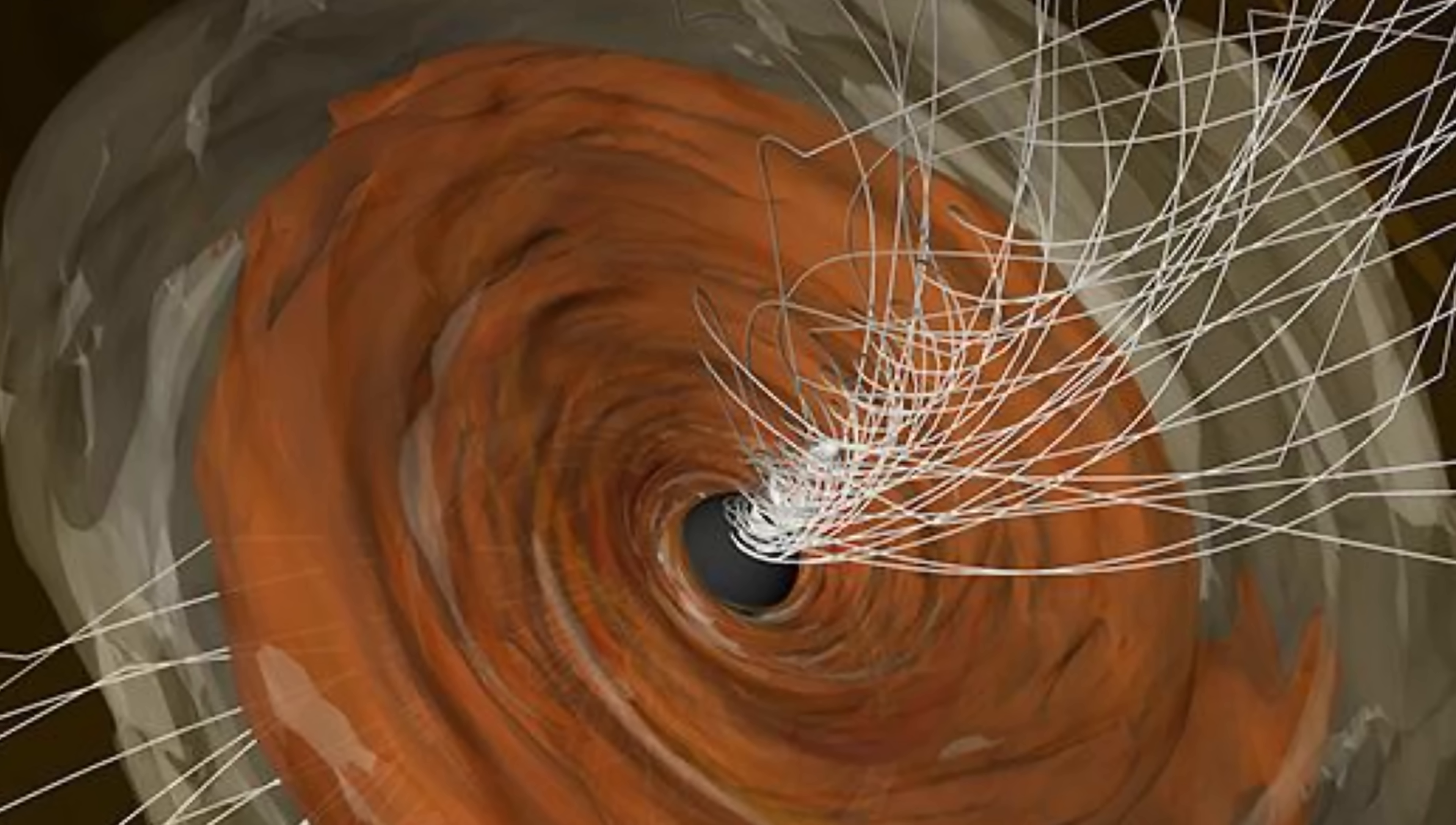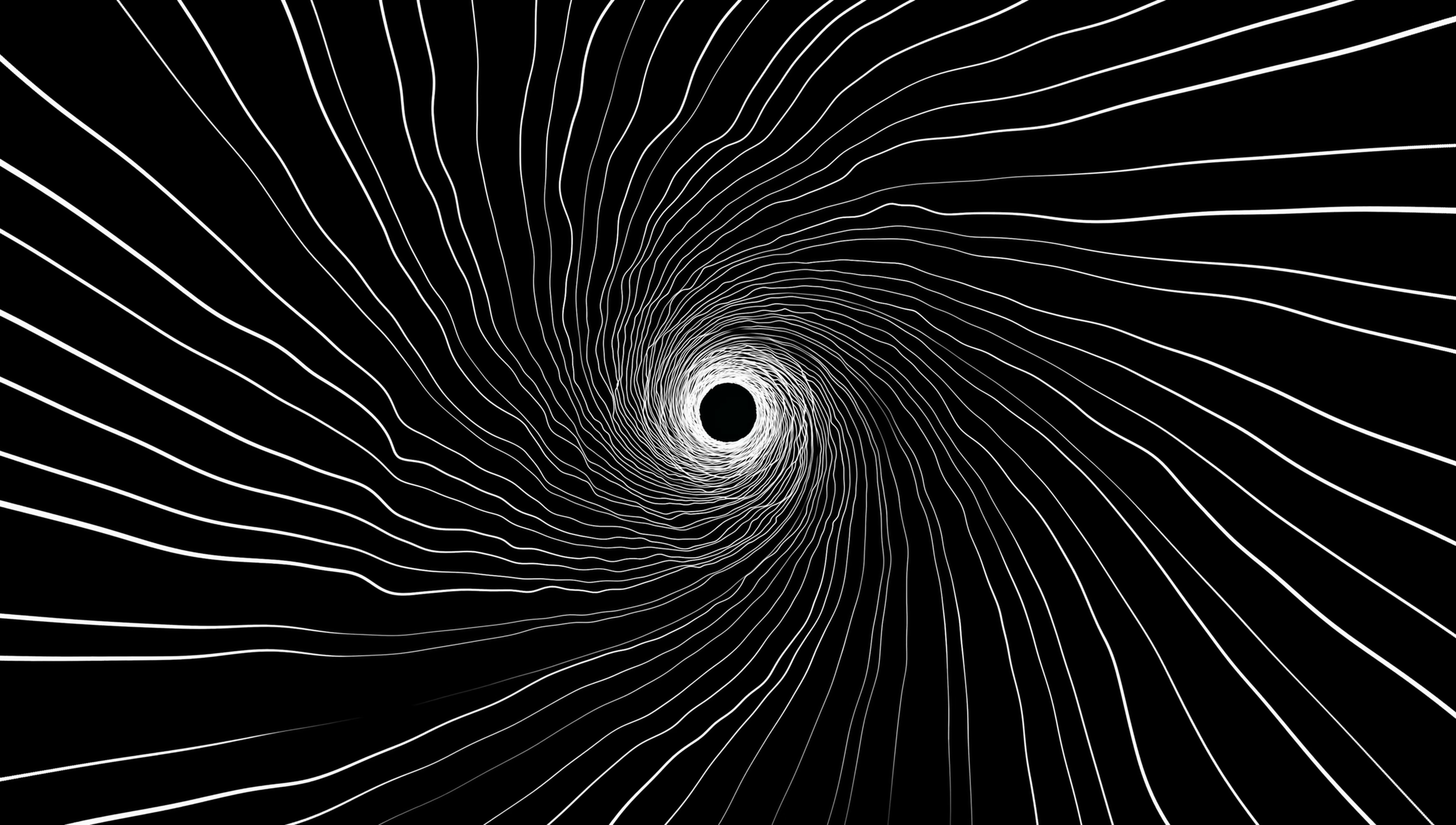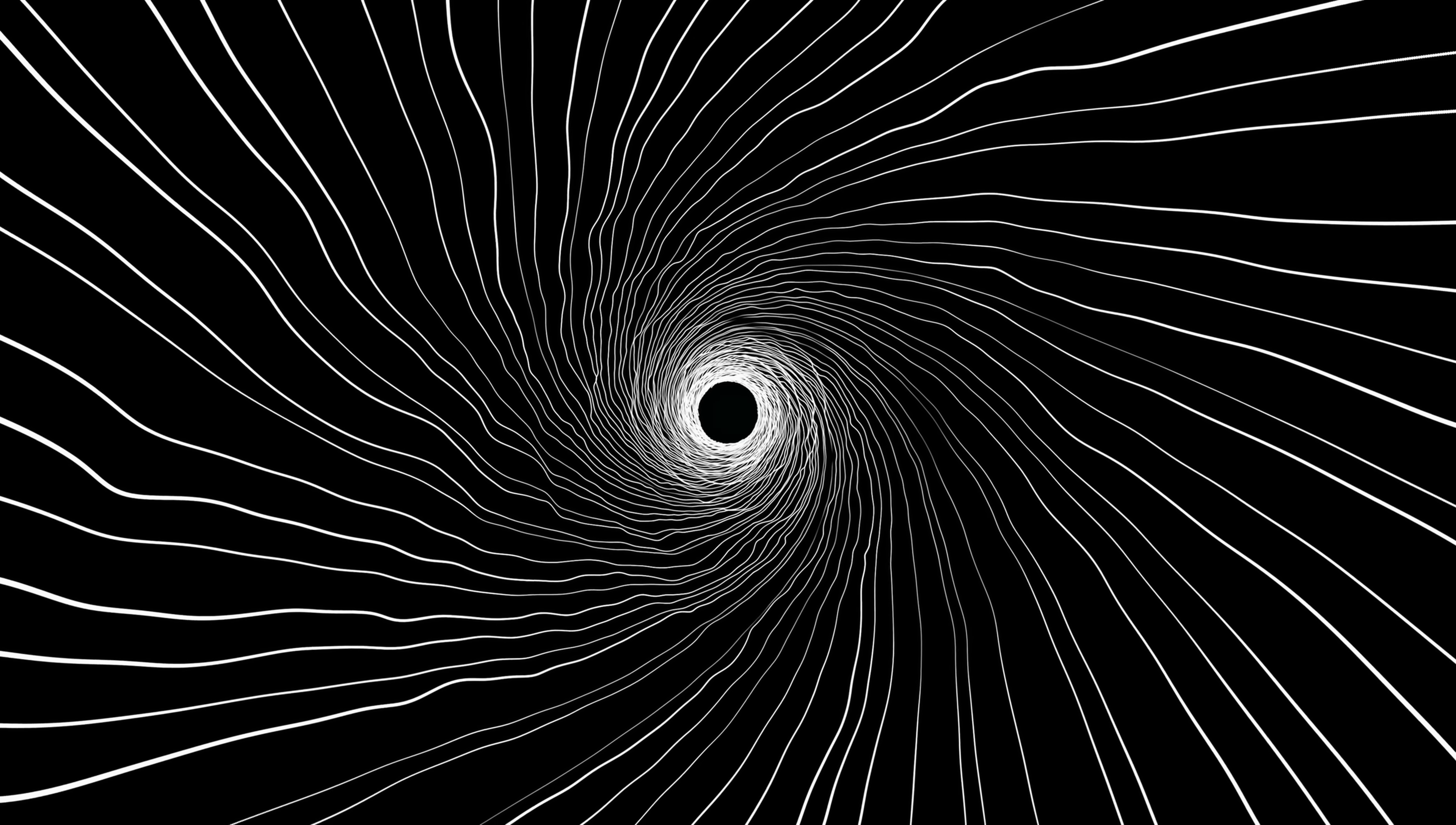Basically we get this super high magnetic interaction that suddenly snaps releasing as a jet, but the energy for this jet comes from the black hole's spin.